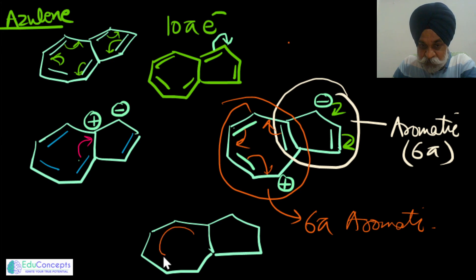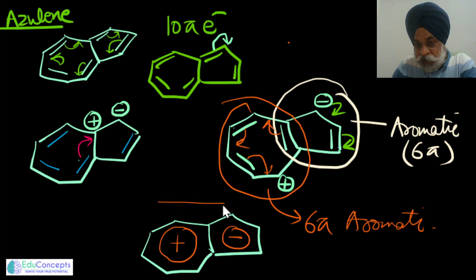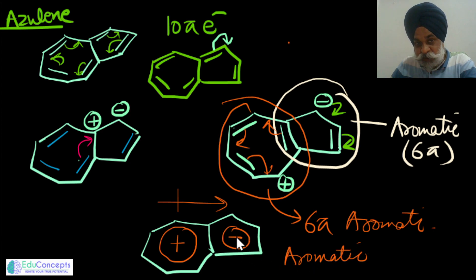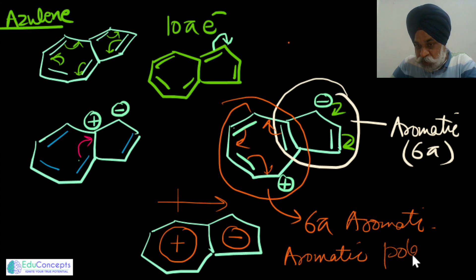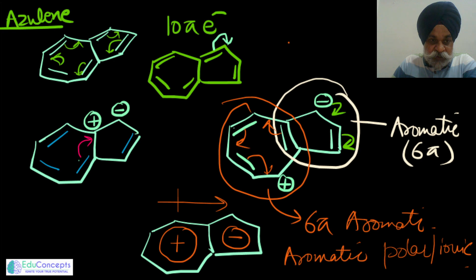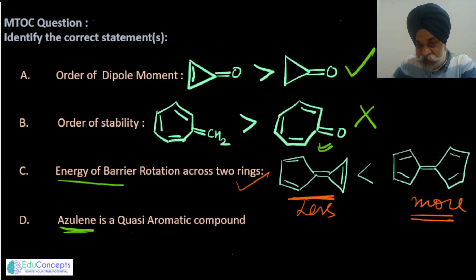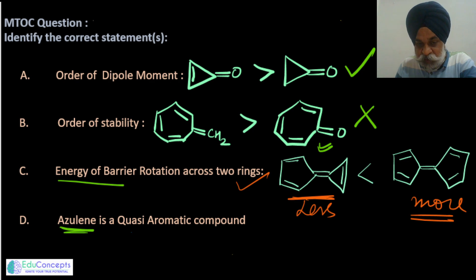Drawing the hybrid structure of azulene: positive charge on the seven-membered ring side, negative charge on the five-membered ring side — clearly it is an aromatic compound. We can also say it is quasi-aromatic because one bond polarization leads to development of positive charge on the seven-membered ring and negative charge on the five-membered ring. So azulene is both aromatic and quasi-aromatic.